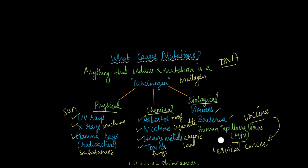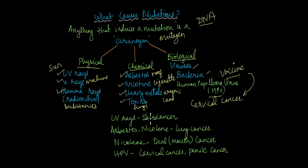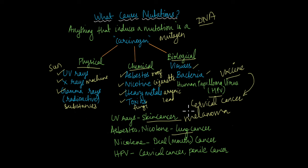Looking at the types of cancers these mutagens cause: UV rays often lead to skin cancer, also known as melanoma. Asbestos and nicotine mostly affect the lung — asbestos, when inhaled, accumulates within the lungs. Similar to the chemicals present in cigarettes, they go on to affect the cells in the lung, causing lung cancer. Nicotine can also cause cancers of the mouth and stomach as well.